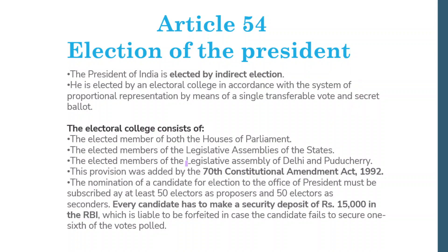Who are the elected members in the Electoral College? The Electoral College consists of the elected members of both Houses of Parliament. Every place it is elected members — nominated members will never vote. If you have a question about which members cannot vote in the presidential election, the answer is: nominated members cannot vote.